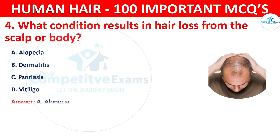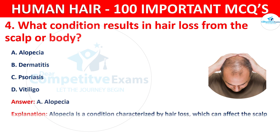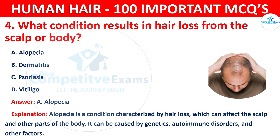The correct answer is A — alopecia. Alopecia is a condition characterized by hair loss which can affect the scalp and other parts of the body. It can be caused by genetics, autoimmune disorders, and other factors.